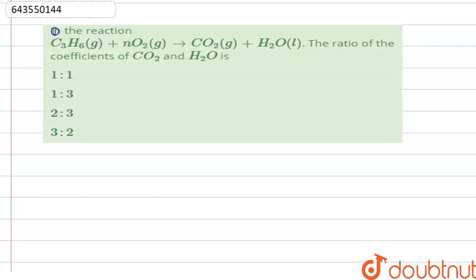Hello students, today's question is: in the reaction C3H6 gas plus NO2 gas gives CO2 gas plus H2O liquid, the ratio of the coefficient of CO2 and H2O is what? We are given 4 options.